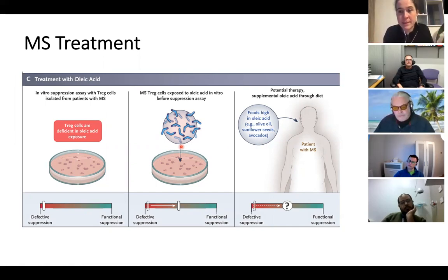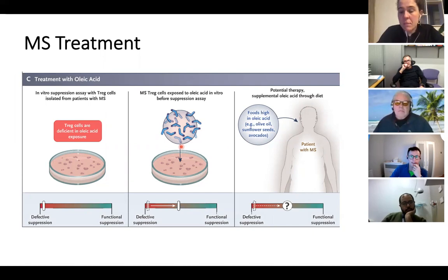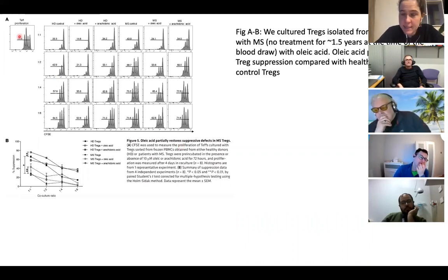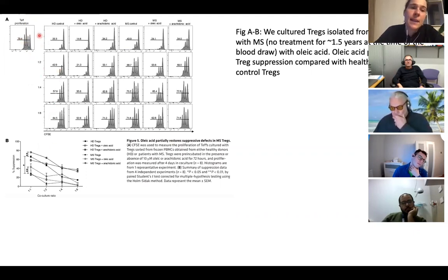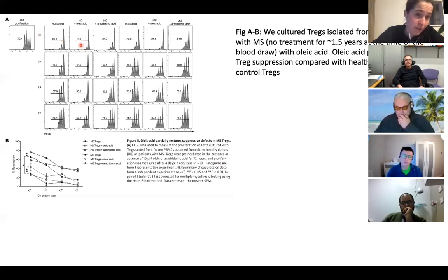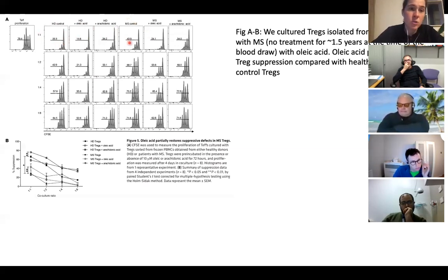Their next hypothesis was that supplementing oleic acid to regulatory T cells could undo the lack of suppressive capacity and shift T cells toward a more regulatory phenotype. To test this, they co-cultured effector T cells with regulatory T cells at different ratios and measured suppressive effect, finding that oleic acid addition increased suppression in healthy controls.